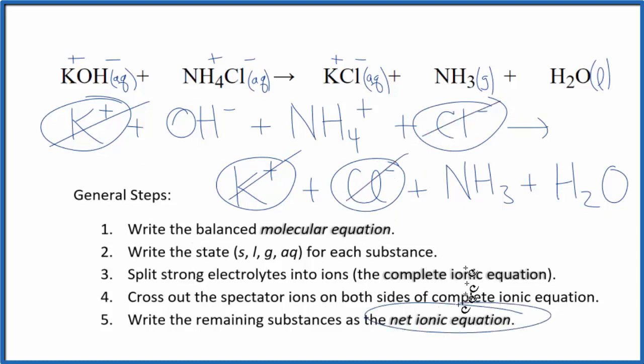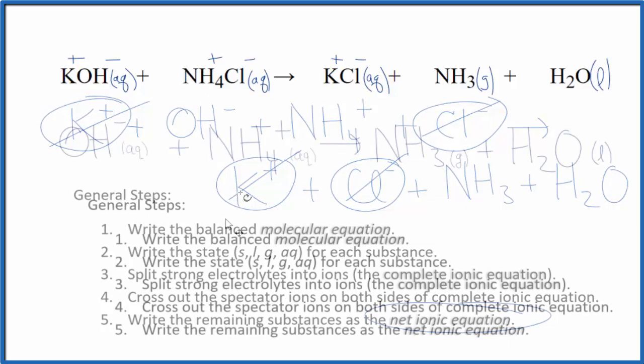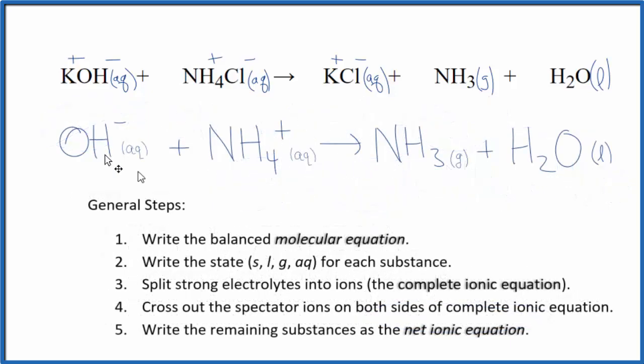I'll clean it up and write the states in. We'll have our net ionic equation. And this is the balanced net ionic equation for KOH plus NH4Cl. You'll notice that we have a negative charge and a positive charge. They balance out. Everything on this side is neutral. And if you count the atoms up, they'll be the same on both sides.